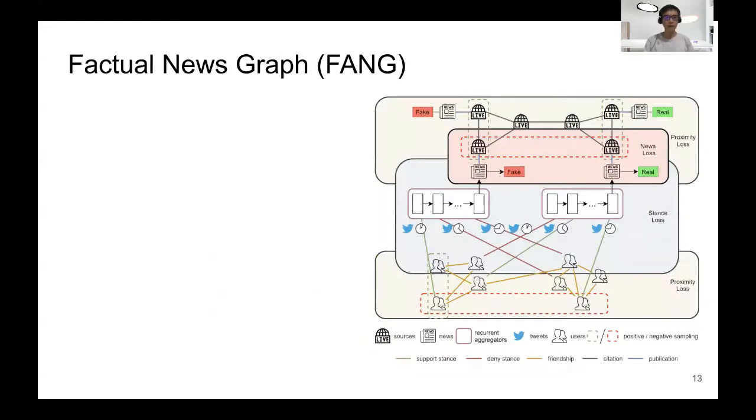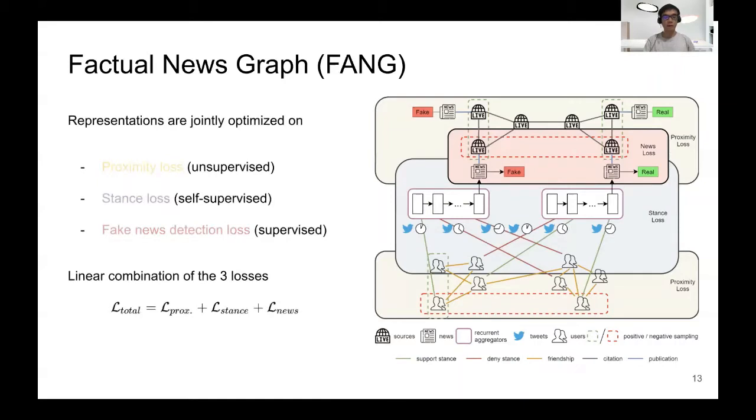In our Factual News Graph, our proposed graph learning framework, the representations are jointly optimized on three objectives, which are proximity loss, stance loss, and fake news detection loss. We use a linear combination of these three losses.